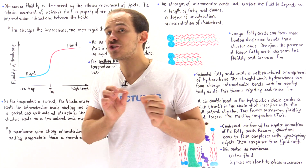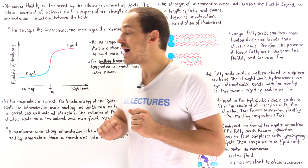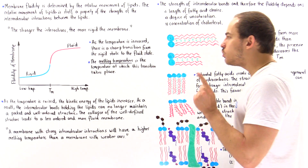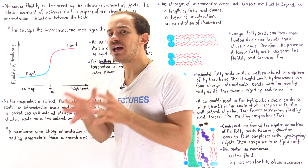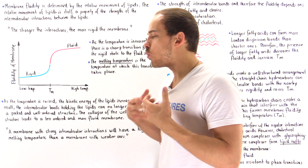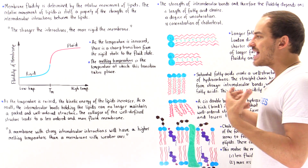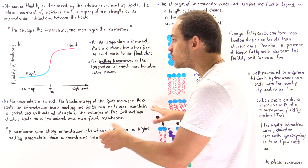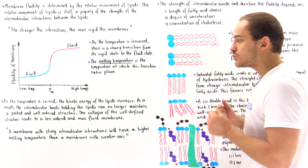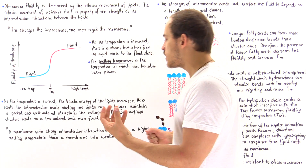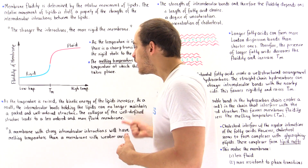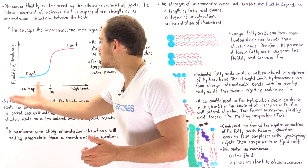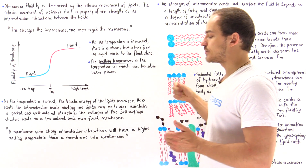As a result, the intermolecular non-covalent bonds holding the lipids can no longer maintain a packed, well-ordered, well-defined structure. The collapse of this rigid structure creates a more fluid and less ordered structure — we go from the rigid state to the fluid state.